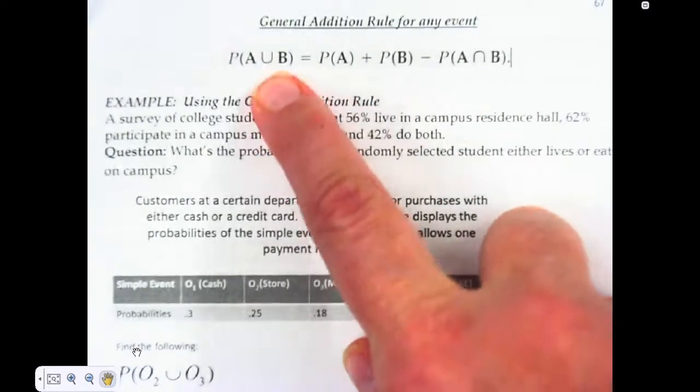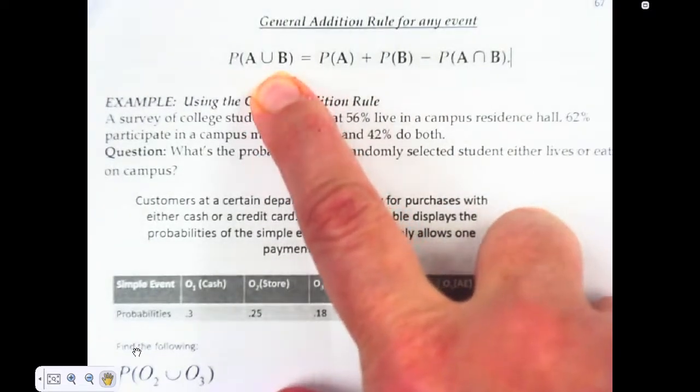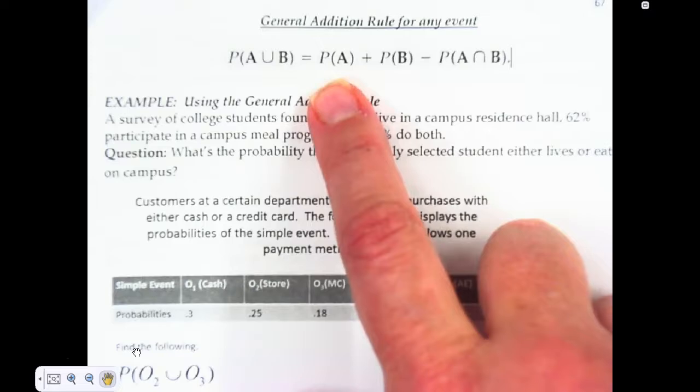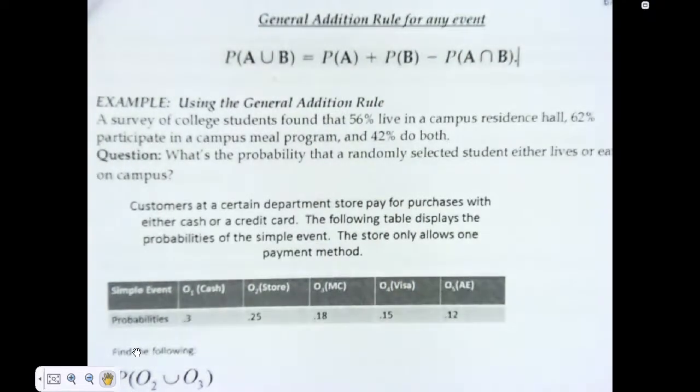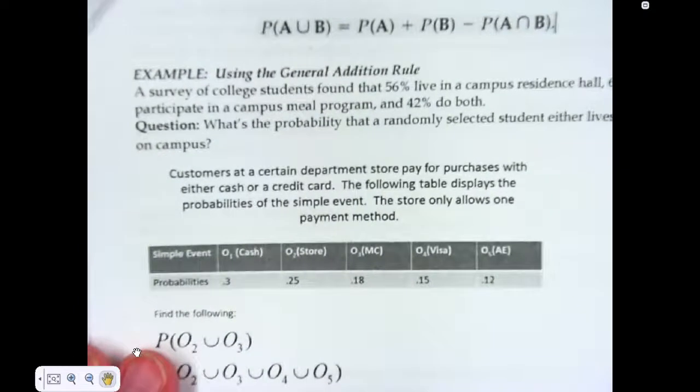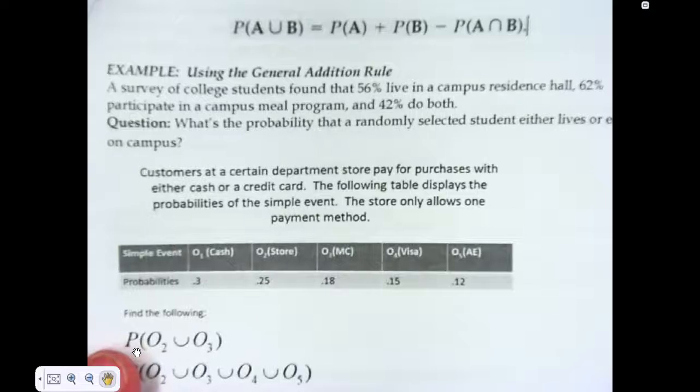When you want to find the probability of A or B, you add the probability of A, add the probability of B, and then subtract the probability of A and B. It's important that you subtract the probability of them both, because if not, you're double counting, and your probability could add up to more than one. If you don't want to use this rule, you could always use a Venn diagram like we did earlier. This formula is given to you on your formula sheet.